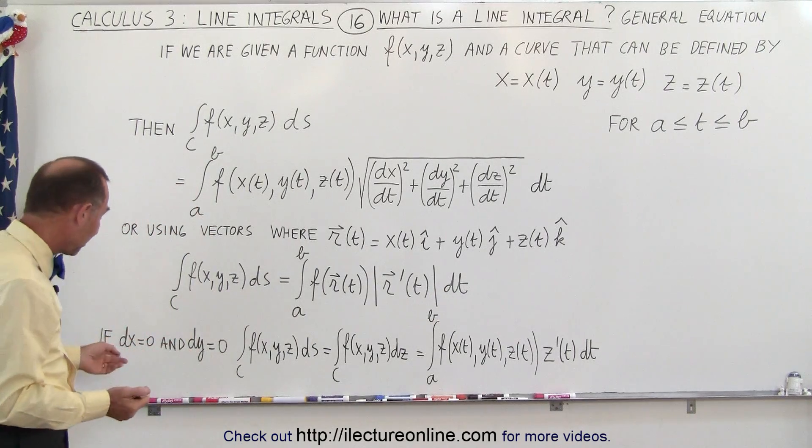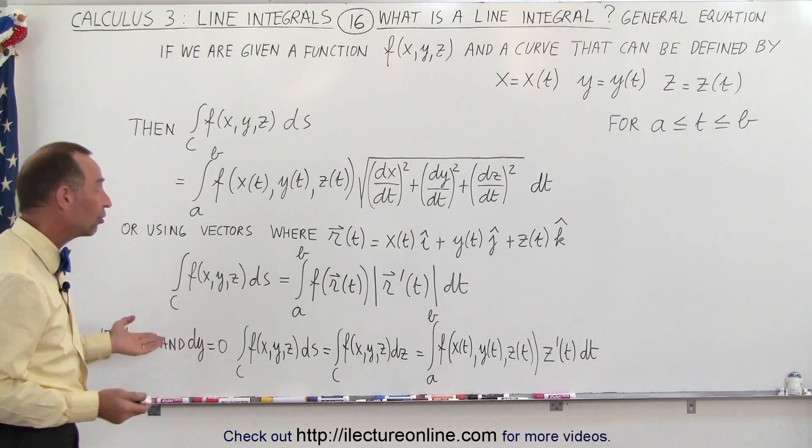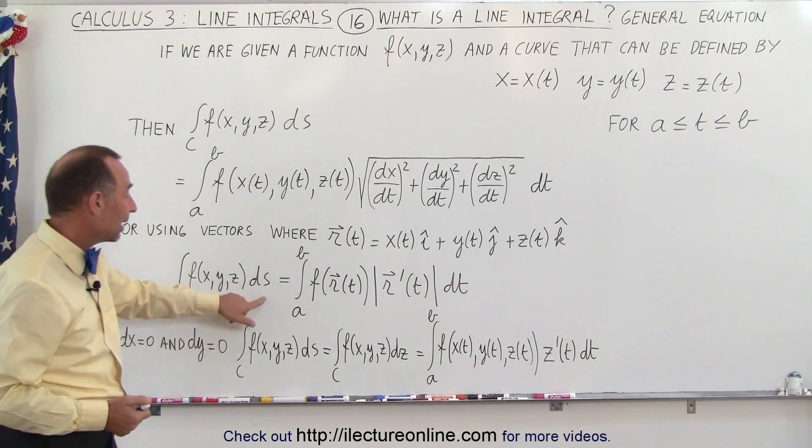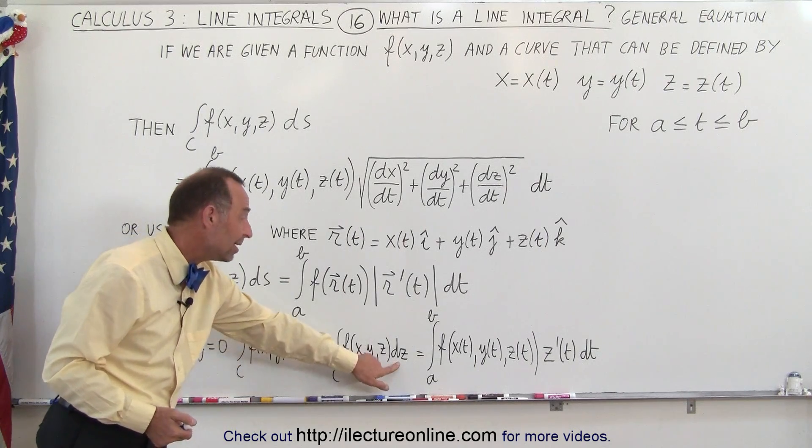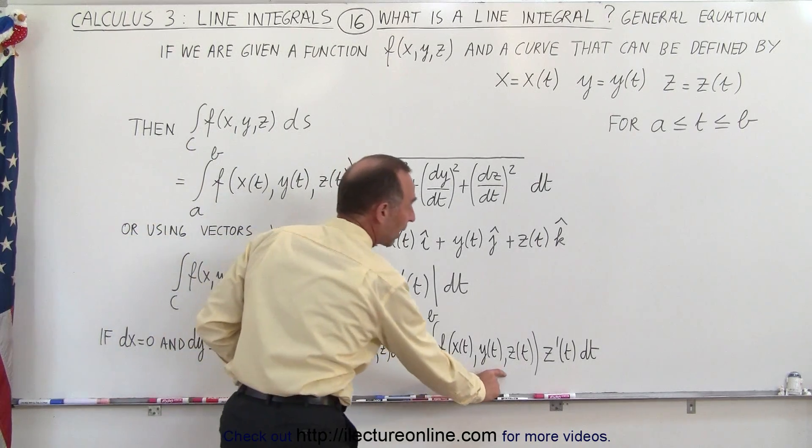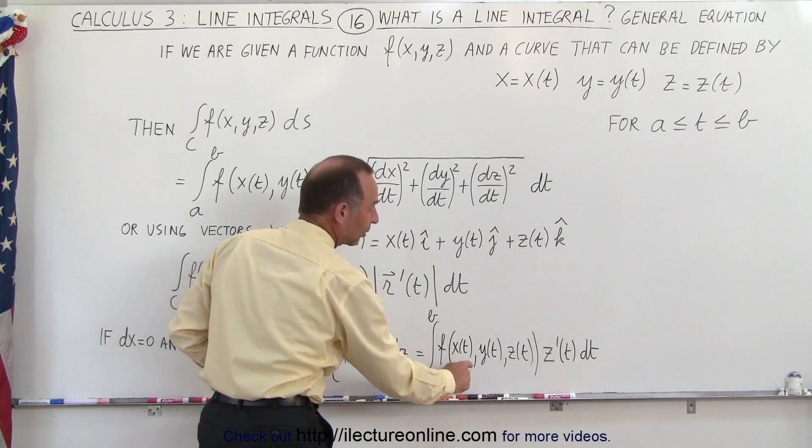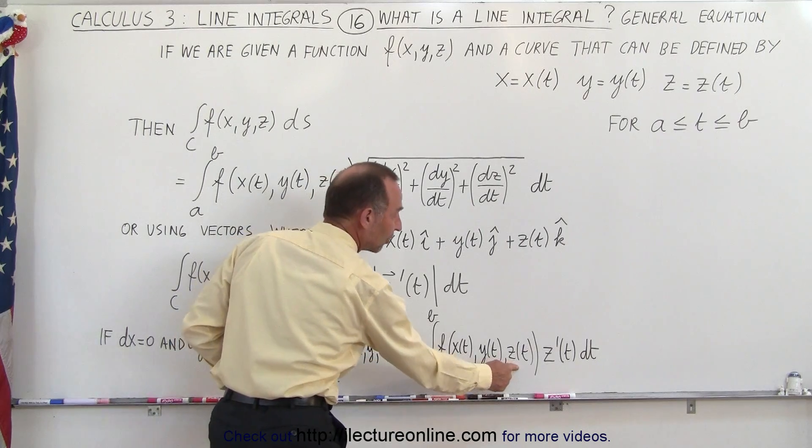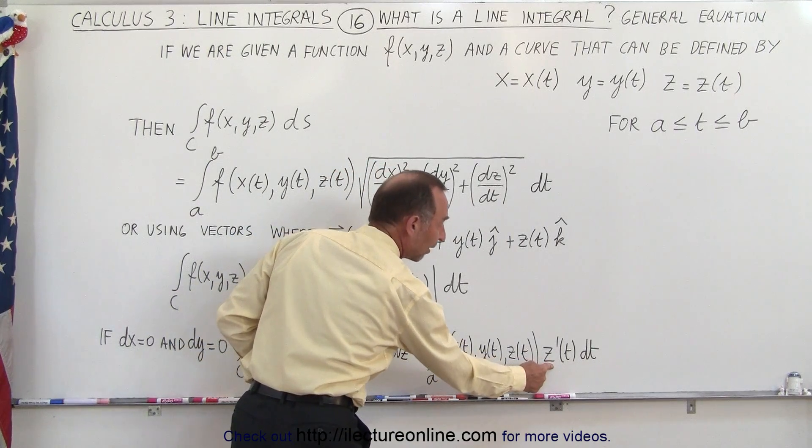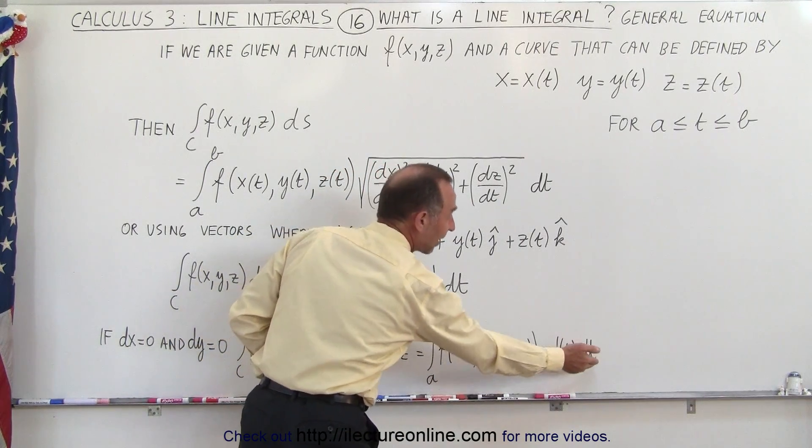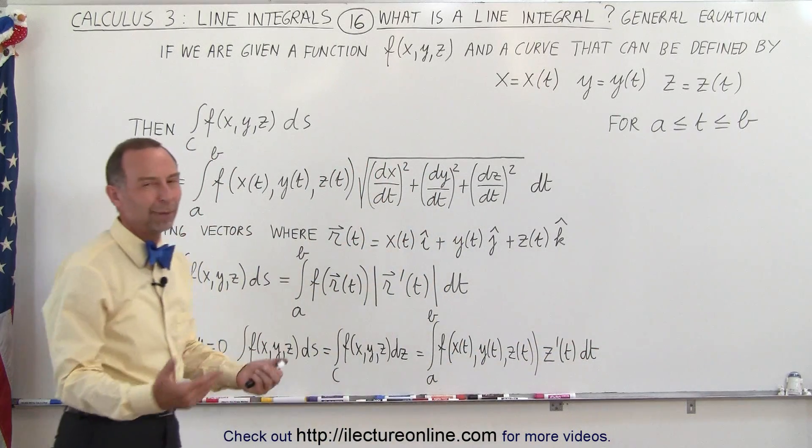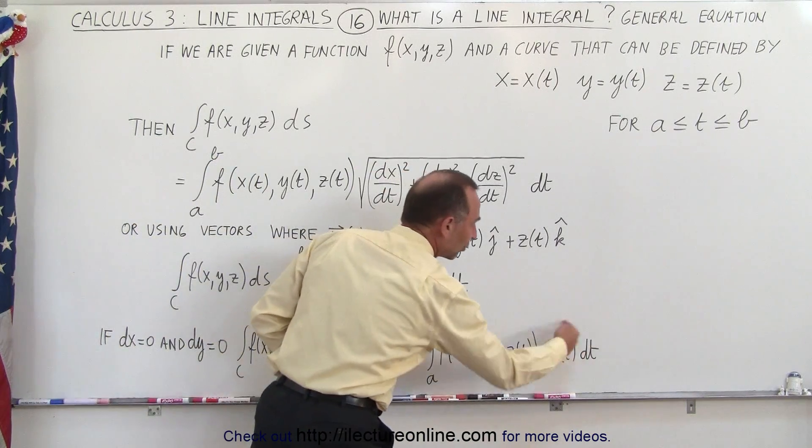And if, for example, dx and dy are equal to 0, then ds will simply become dz, and then the function can be described as follows. So this will be the function expressed in terms of the t variable, the parametric equations for x, y, and z, and then the derivative of z, basically dz/dt times dt, which can then be converted to dz.